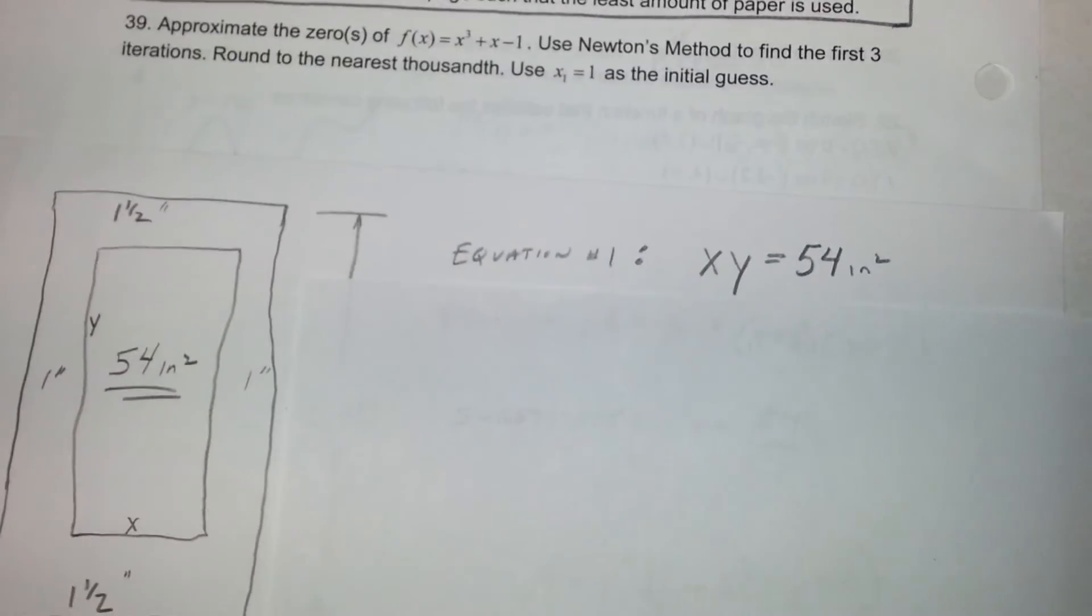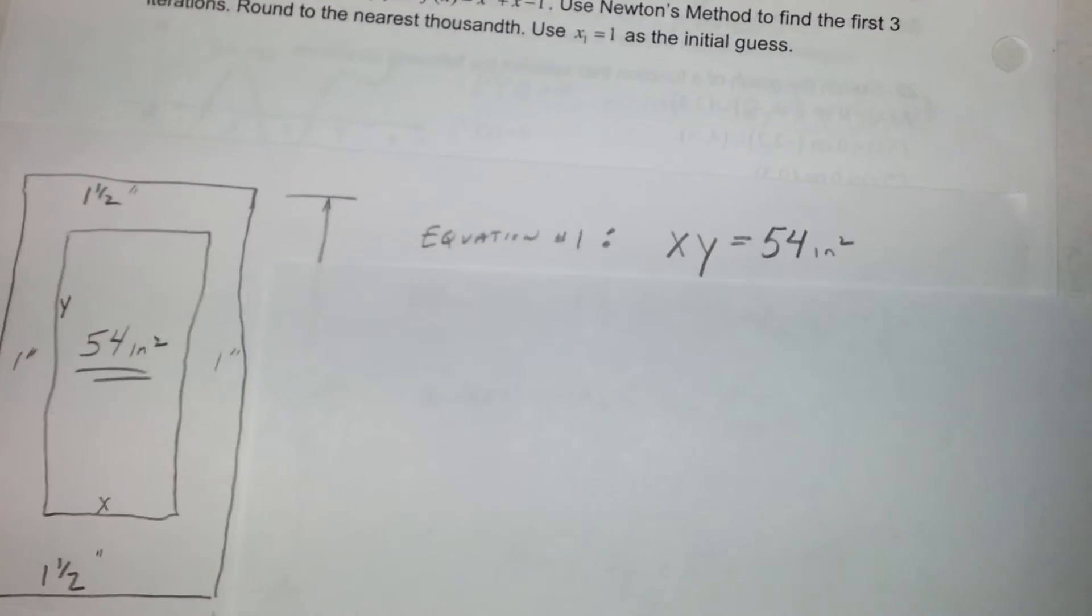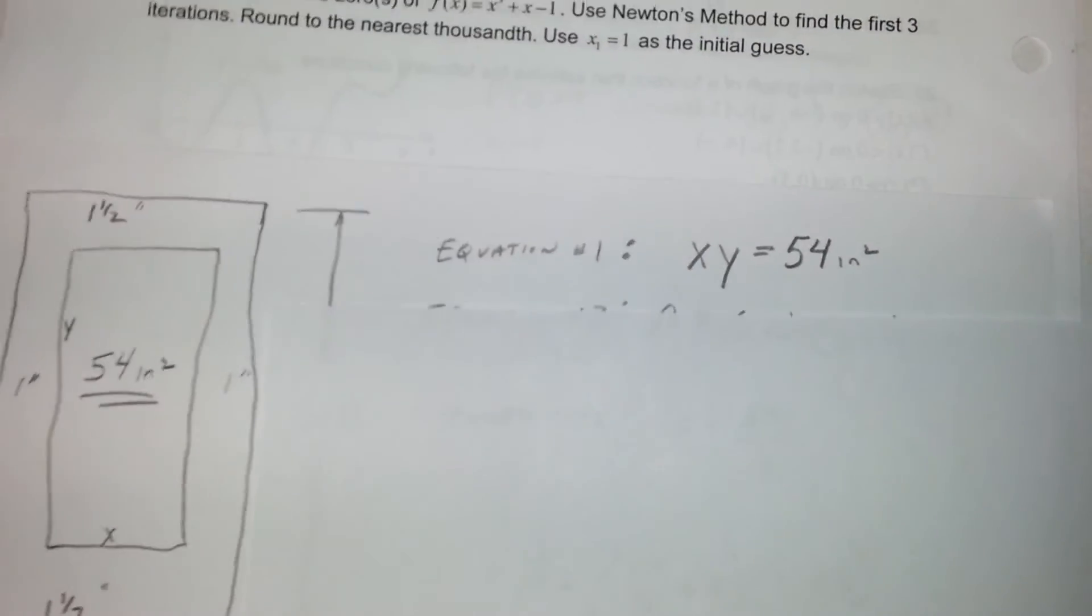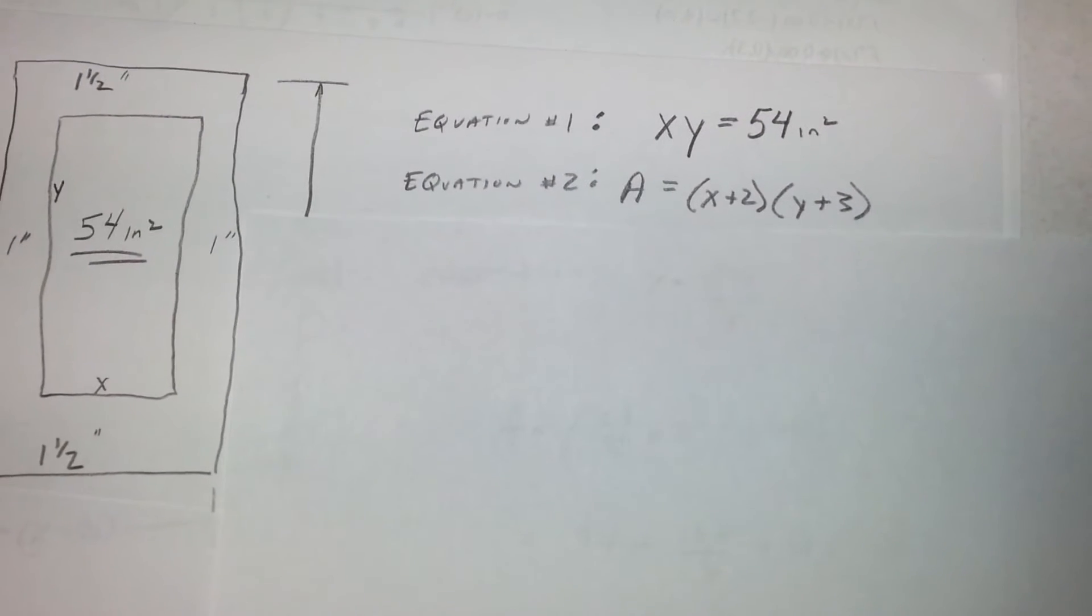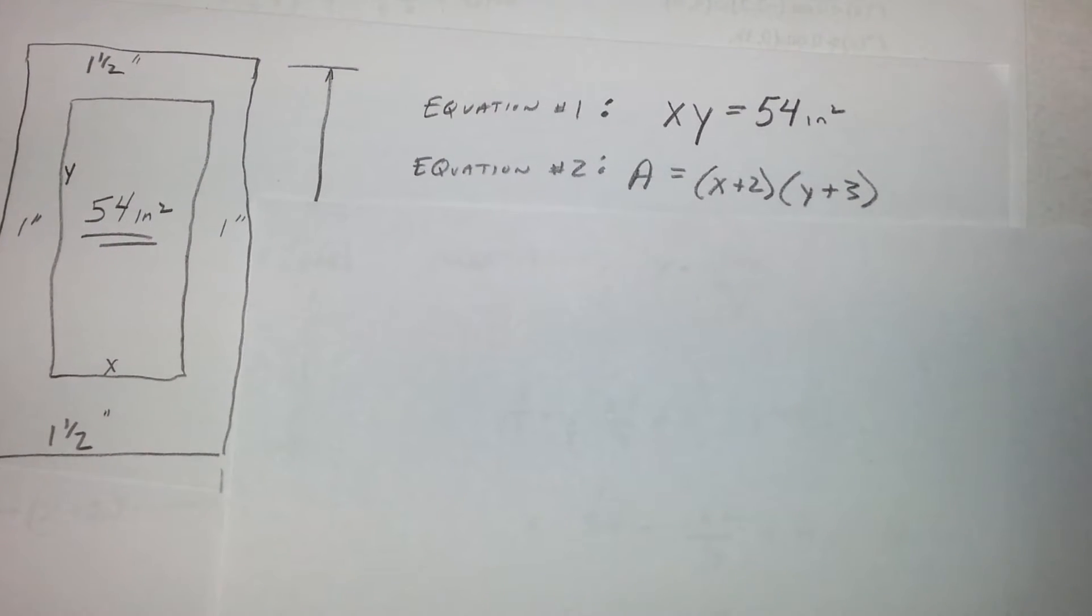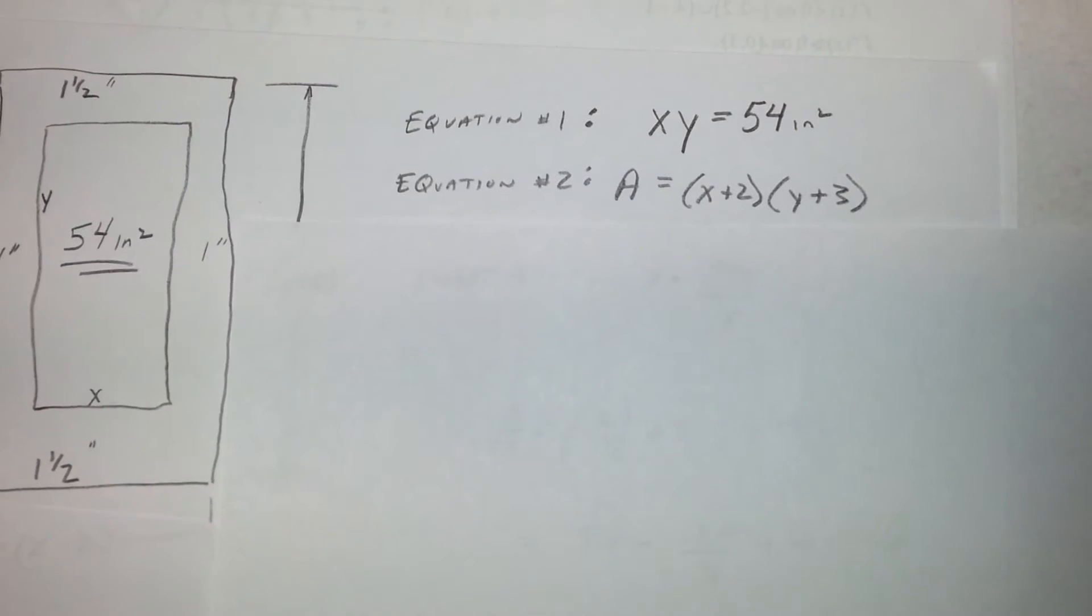Equation one would be our actual print, x times y equals 54 square inches. And the second equation would come up with the area of the paper which would be our x plus two times y plus three.